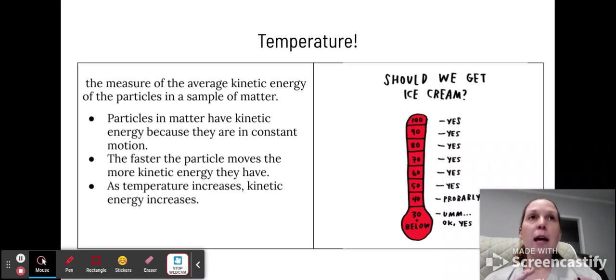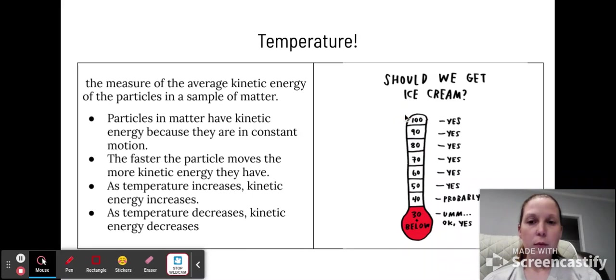When they have more kinetic energy, that tends to make the temperature increase and vice versa. So as you heat a sample up, you're giving it more energy, which means the particles are going to be moving faster. It's the opposite as well. If you cool a sample off, you're slowing those particles down, so they're using less energy for motion.